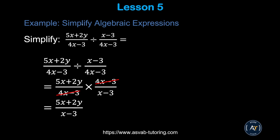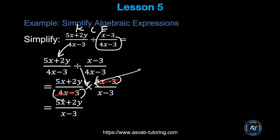To divide fractions, use the keep-change-flip method from lesson one: keep the first fraction, change division to multiplication, and flip the second fraction. After flipping, you can cross out like expressions. If the same expression appears in both numerator and denominator, they cancel out. This gives you 5x plus 2y over x minus 3.